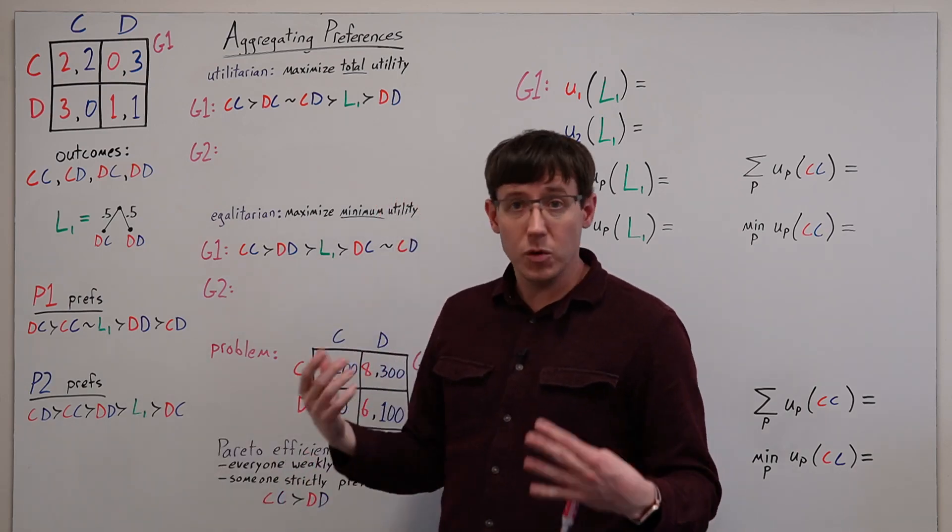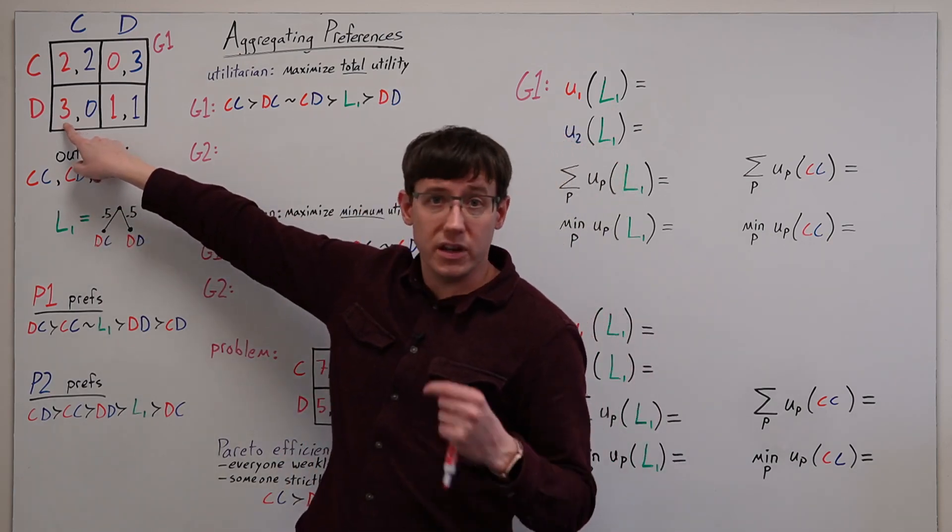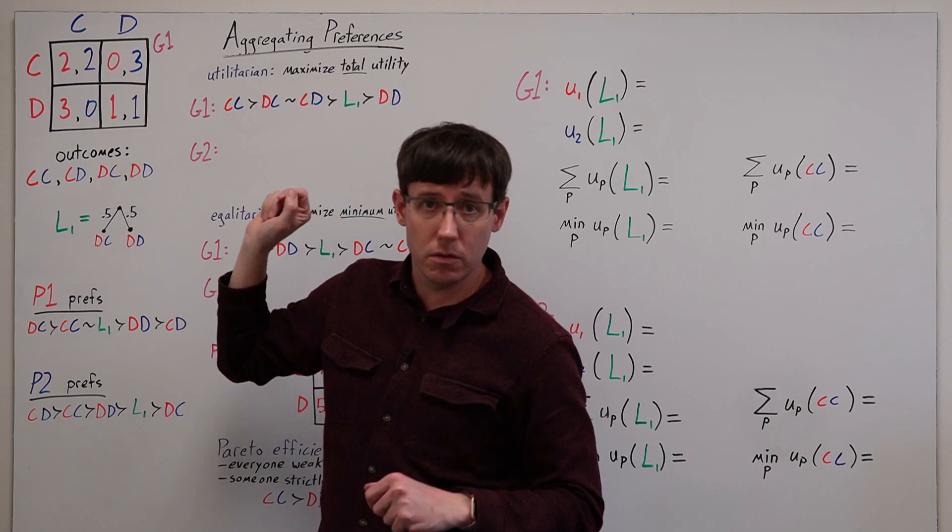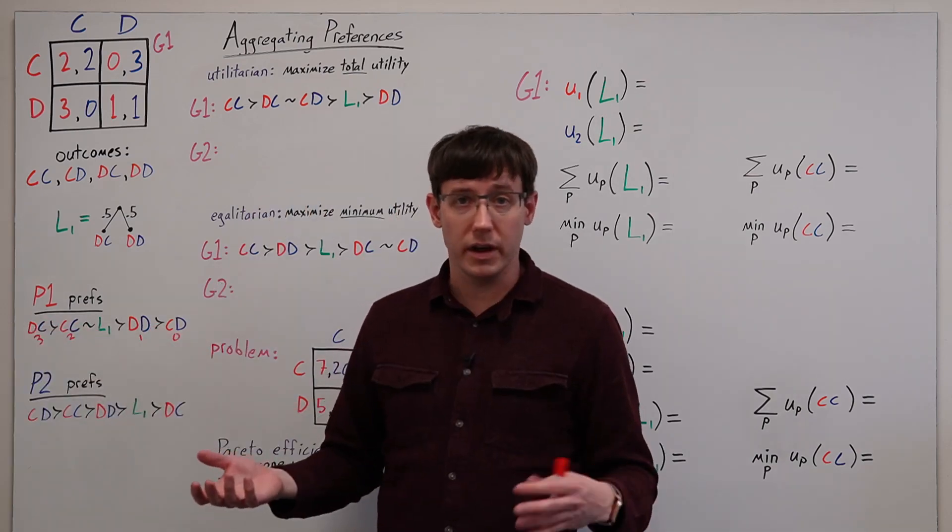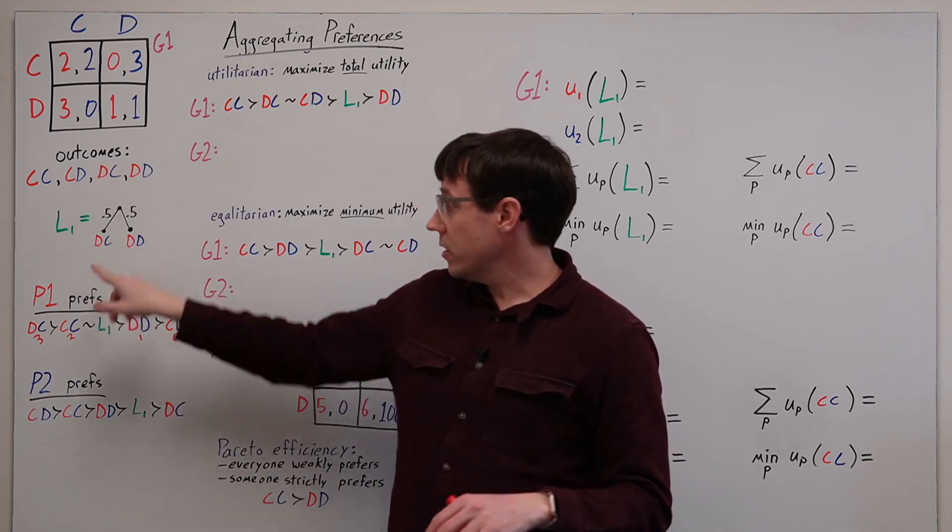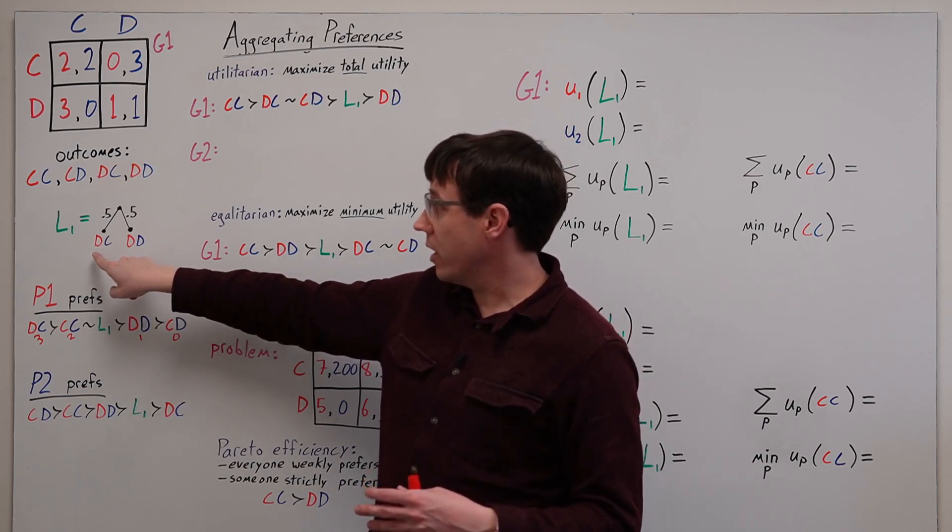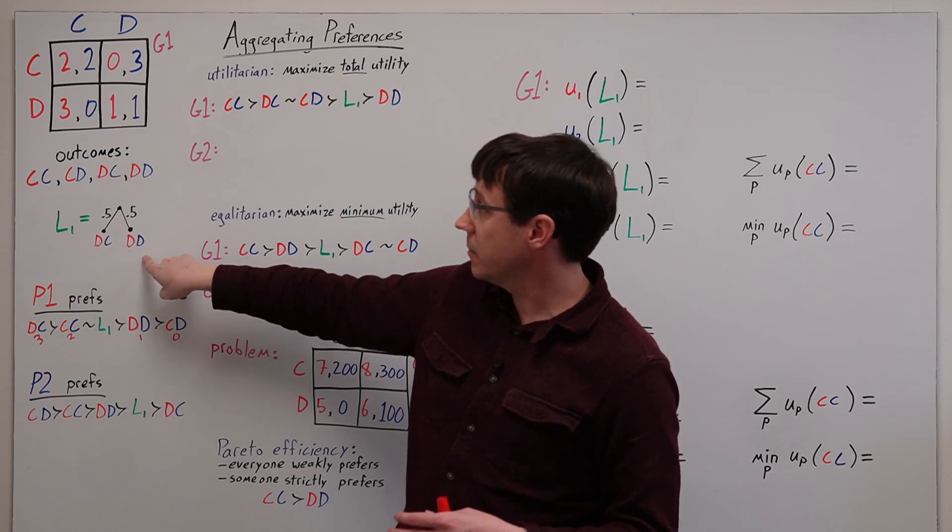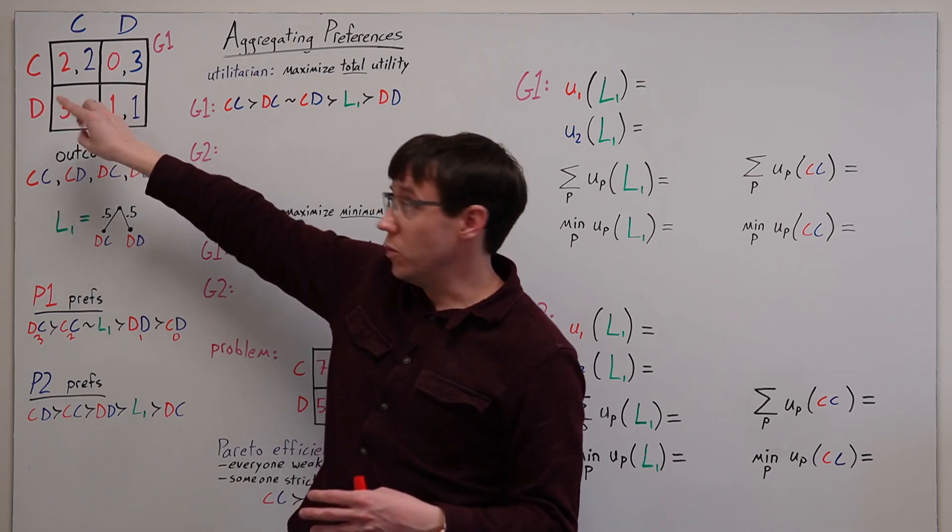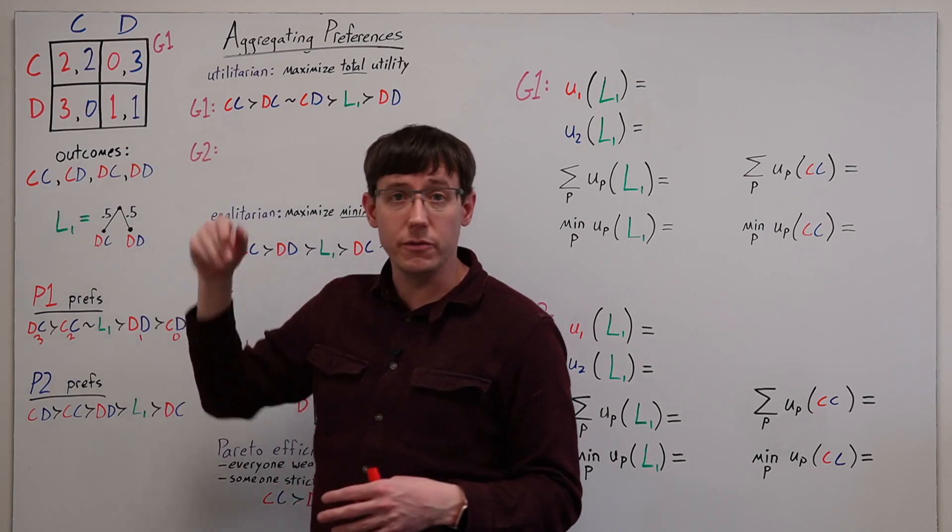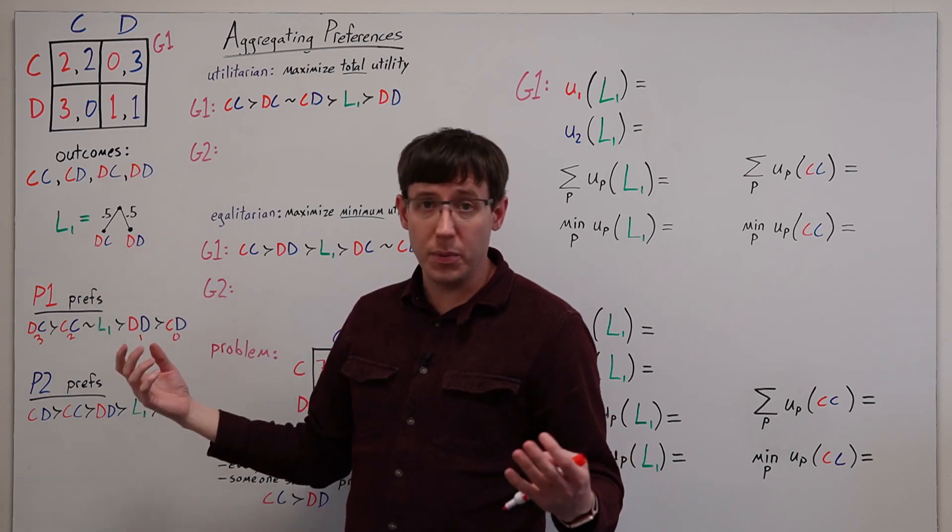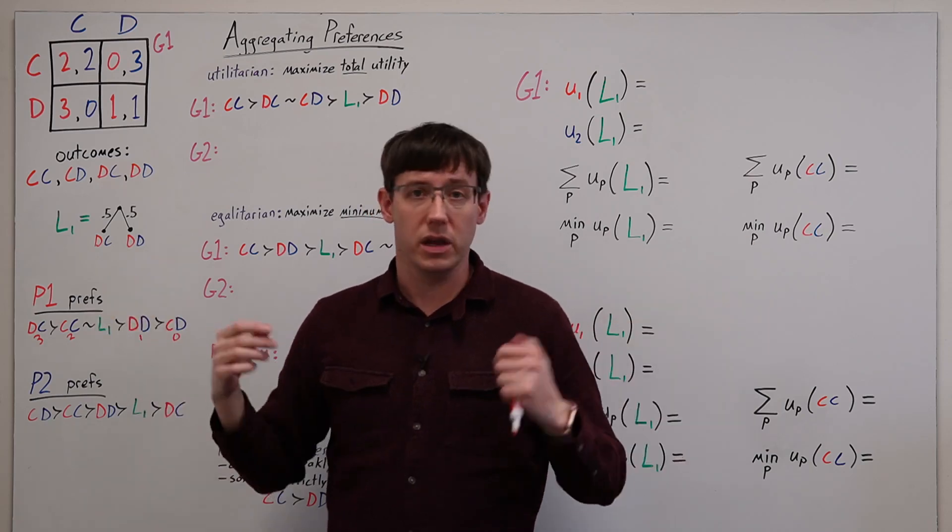For player 1, their most preferred outcome is DC, which gets them a utility of 3, and that's followed by the outcomes that get utilities of 2, 1, and 0. And to compare lotteries against each other or against these outcomes, we just need to compute an expected utility. This lottery L1 gives a 50-50 chance of the outcome DC or DD, and so it corresponds to player 1 picking the action D and player 2 following a strategy that randomizes 50-50 between the actions.